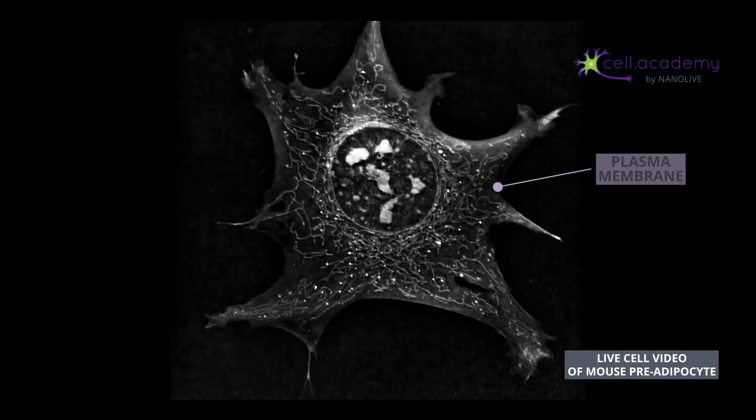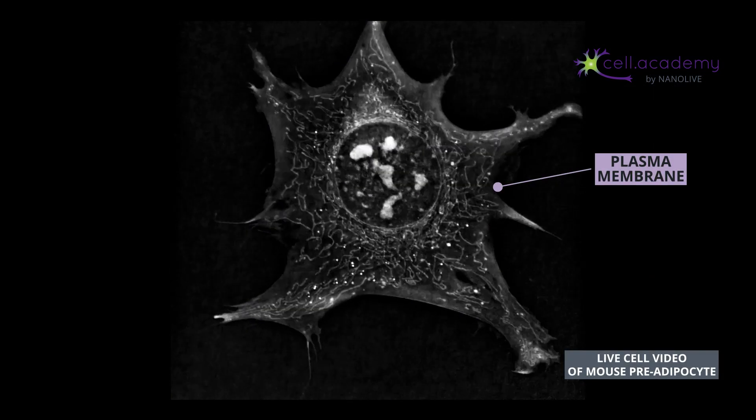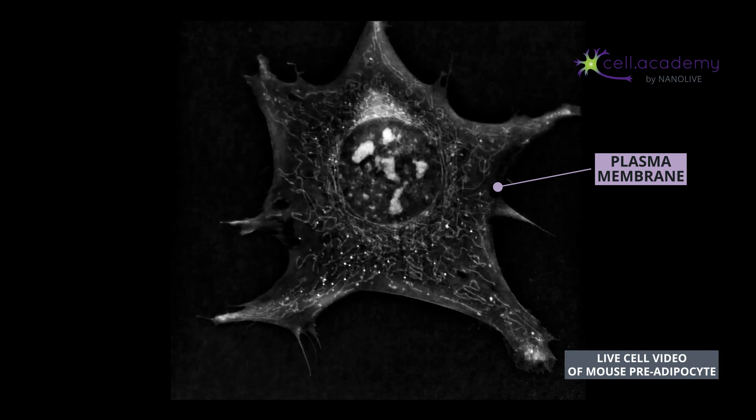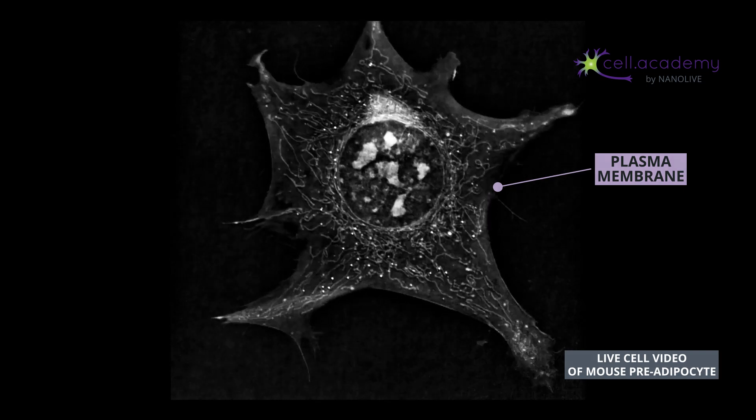Eukaryotic cells are surrounded by a plasma membrane that defines the border between intracellular components and the extracellular environment. Plasma membranes are involved in many cellular aspects, but one of the main roles is to transport molecules, ions, and other substances in and out of the cell.